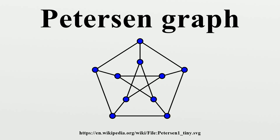Petersen Coloring Conjecture: According to Devos, Nešetřil, and Raspaud, a cycle of a graph G is a set C ⊆ E such that every vertex of the subgraph C has even degree. If G and H are graphs, we define a map φ: E(G) → E(H) to be cycle-continuous if the pre-image of every cycle of H is a cycle of G. A fascinating conjecture of Jaeger asserts that every bridgeless graph has a cycle-continuous mapping to the Petersen graph. Jaeger showed that if this conjecture is true, then so are the five-cycle double-cover conjecture and the Berge–Fulkerson conjecture. In this notation, the Petersen graph is G(5,2).